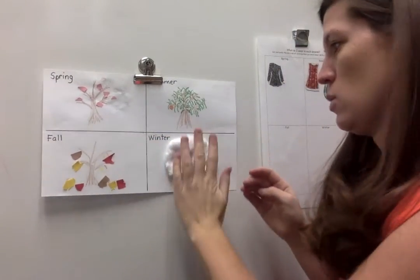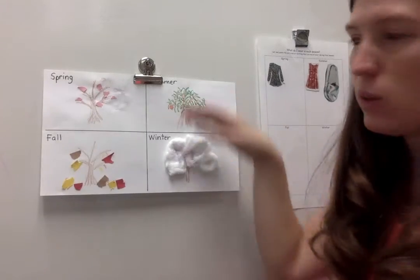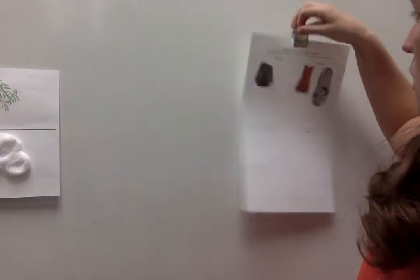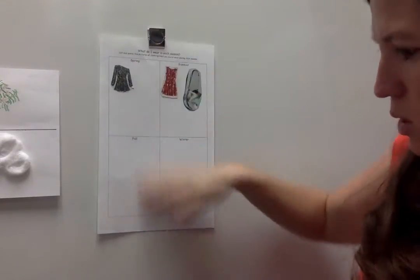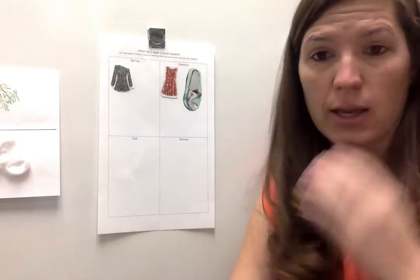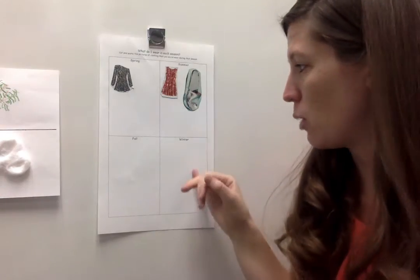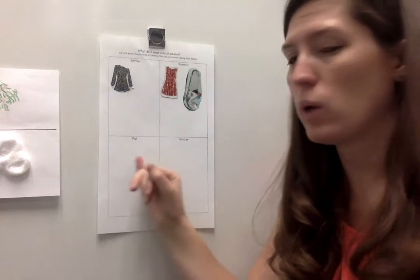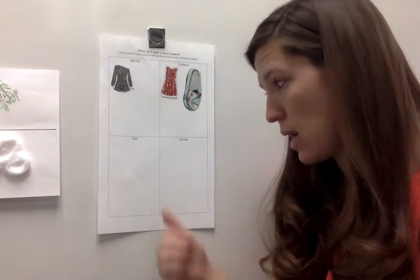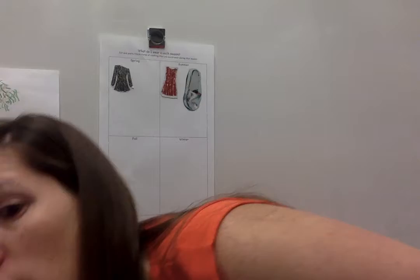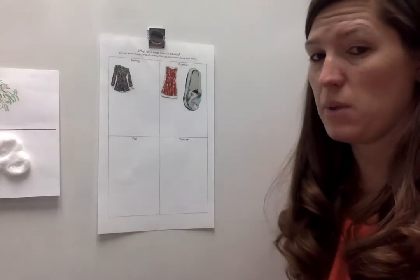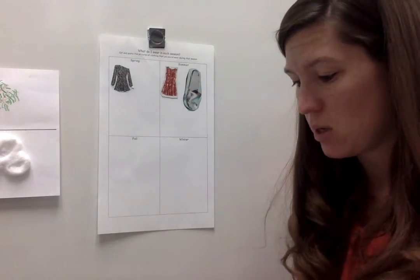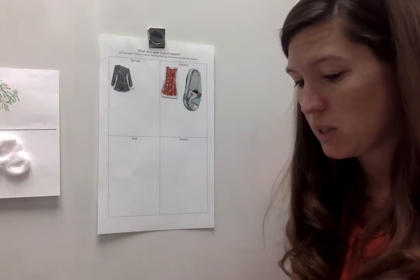After you're done with your peach tree, come back to your clothing sort and get a magazine or draw pictures of clothes that you would wear in the fall. So we are in the season of fall right now. So what are you wearing in the fall? Maybe a sweater, maybe jeans, maybe sneakers.